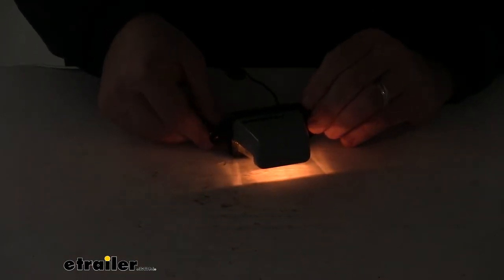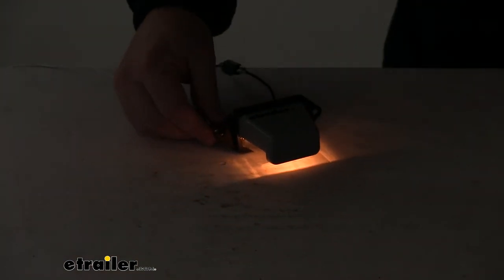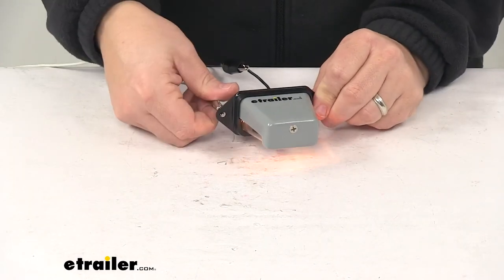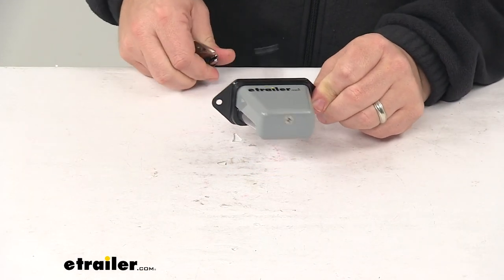One more time, bulb number is 168. That's going to do it for today's look at the Peterson license plate light.